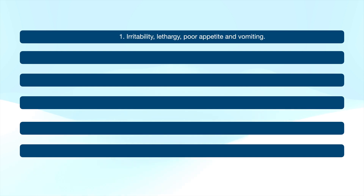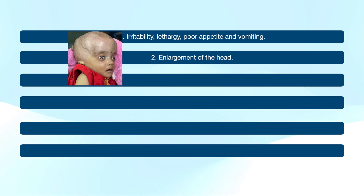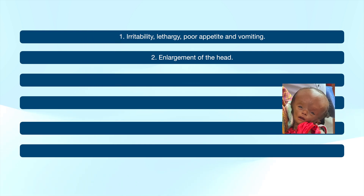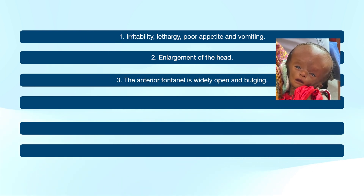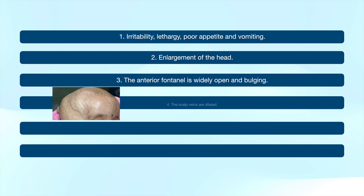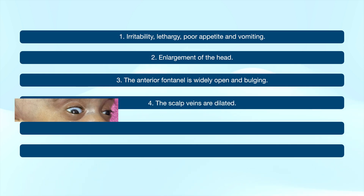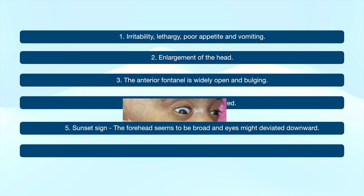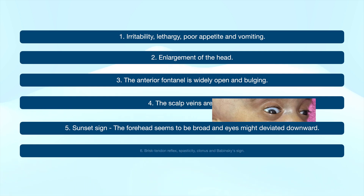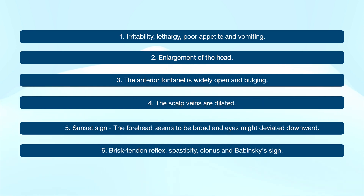The clinical features we see in hydrocephalus are: irritability, lethargy, poor appetite and vomiting, enlargement of the head. The anterior fontanelle is widely open and bulging. The scalp veins are dilated. Sunset sign — the forehead seems to be broad and eyes may deviate downward. Brisk tendon reflex, spasticity, clonus, and Babinski sign.